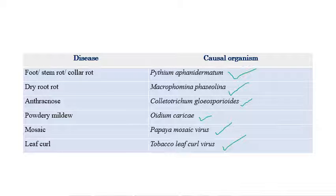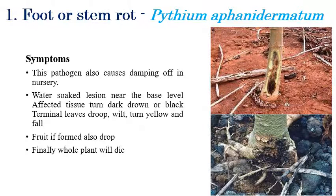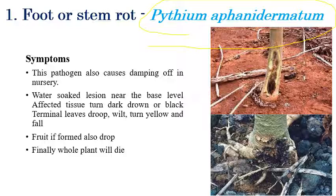The first disease is foot rot or stem rot, caused by Pythium aphanidermatum. This pathogen is mainly responsible for damping off in nursery stages. Whatever crop you take, Pythium is mainly involved in damping off, especially during nursery stages. Even after, during crop growth stage, we can see it initially, but damping off is very common during the nursery stages.